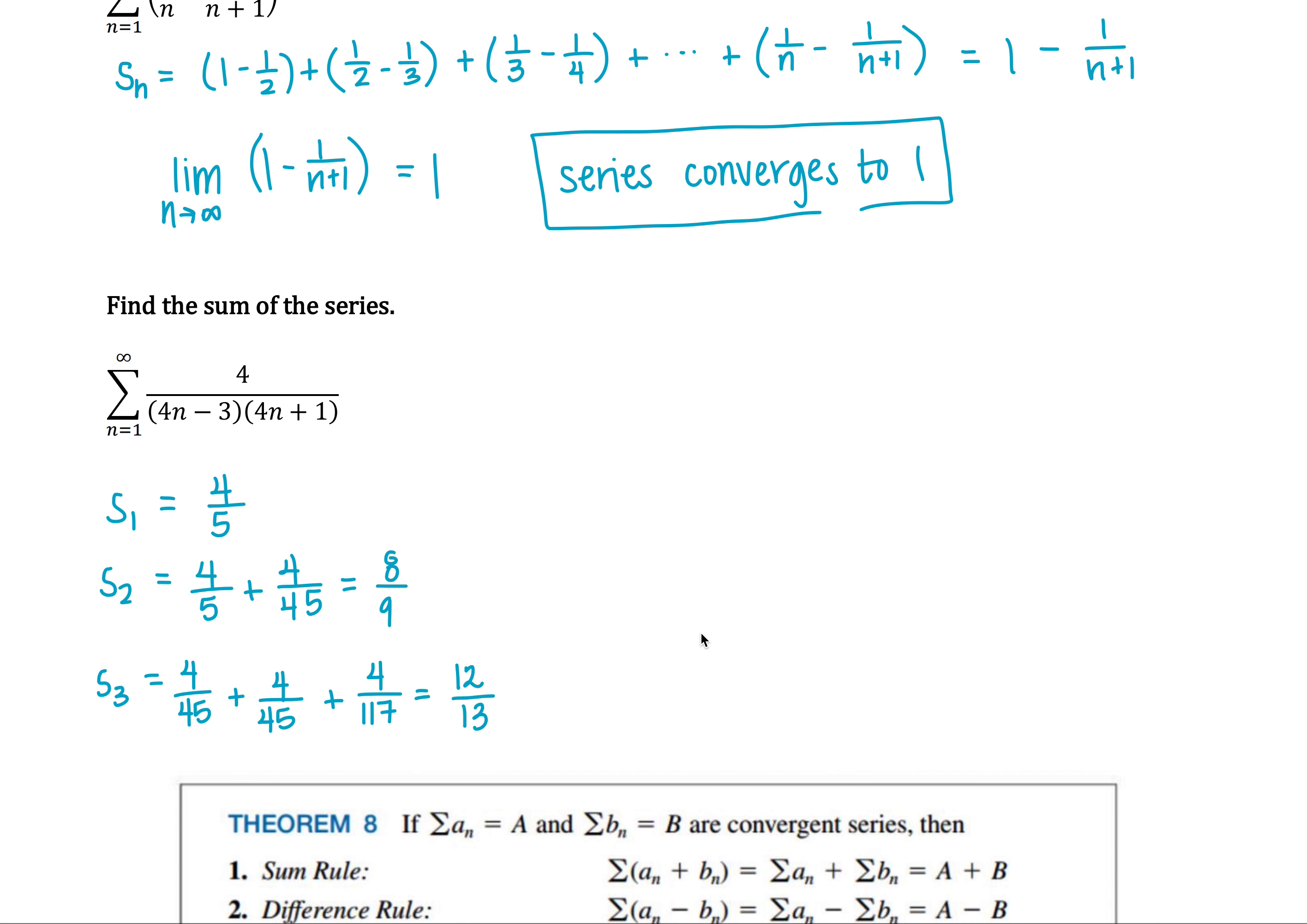Hopefully you can start to see a pattern emerging here. The numerator is 4 times the index number, and the denominator is just 1 plus the numerator.